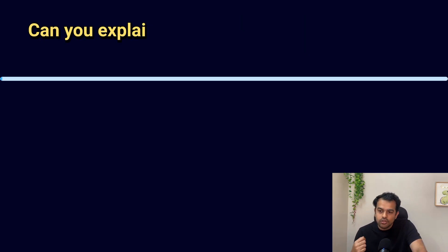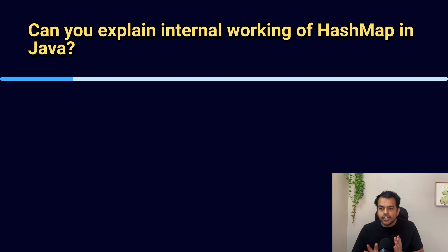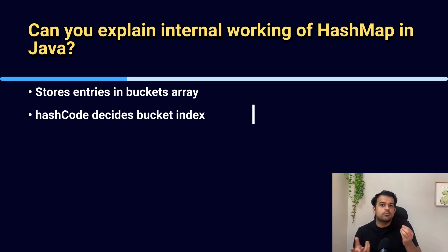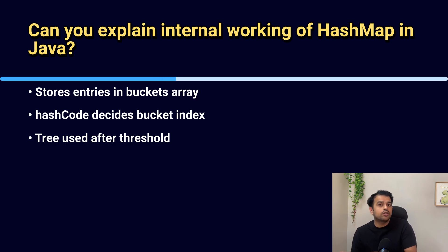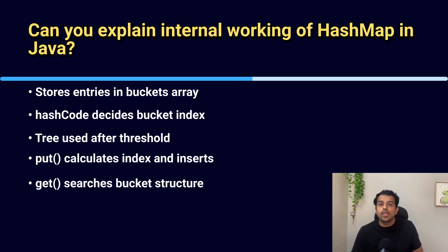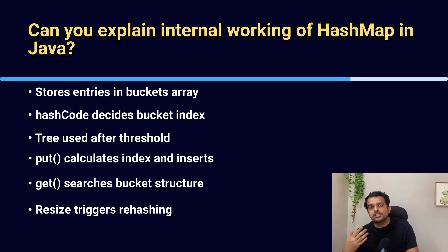Now the interviewer asks some core Java questions. Can you explain the internal working of HashMap in Java? HashMap stores key-value pairs in an array called buckets — each key's hash code decides which bucket it goes in. If two keys land in the same bucket, they form a linked list or tree structure. When a list becomes too long, it gets converted into a balanced tree for faster lookup. During put, HashMap calculates the index, checks for duplicates, and inserts or updates the entry. During get, it finds the bucket and searches the list or tree for the matching key. When the size grows beyond a threshold, HashMap resizes and rehashes entries. A follow-up: what happens internally during resizing — comment your answer below.